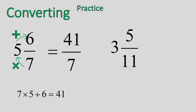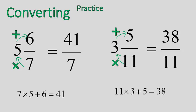Welcome back. Hopefully you tried to solve that one. We did 11 times 3, which gives you 33. And then you add 5 onto that, and you'll get 38. So it gives you a total of 38 over 11.